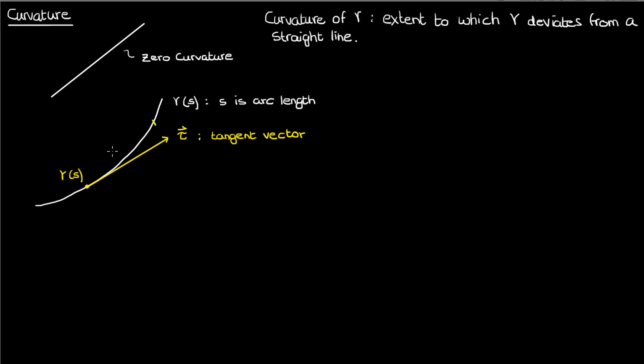If we move up the curve gamma by an infinitesimally small parameter increment delta s to end up at gamma of s plus delta s, the curvature at our original point gamma of s can be found by computing the deviation of the immediate point post curvature from the corresponding point on the tangent line, which as mentioned earlier has zero curvature.